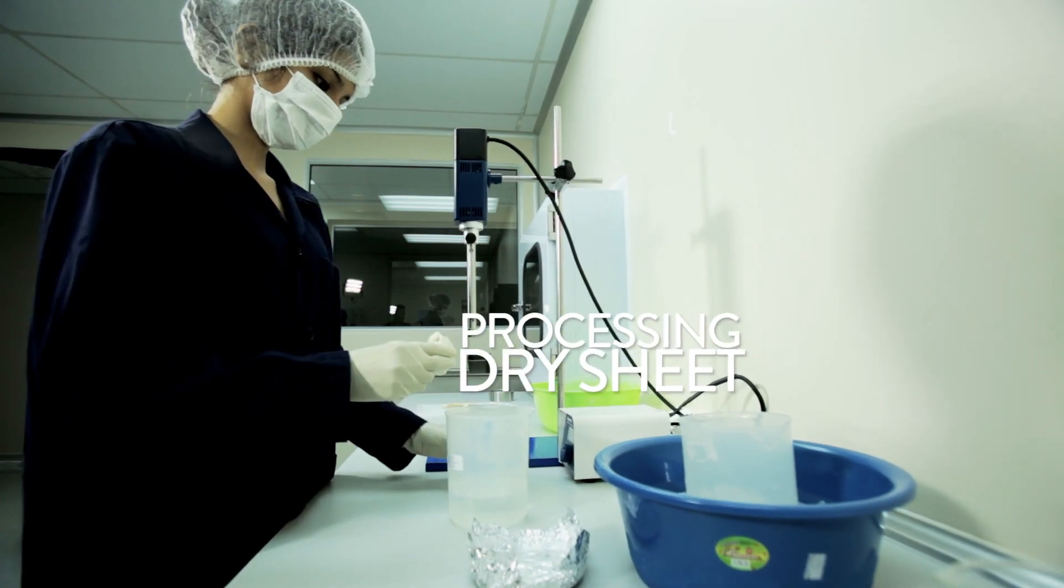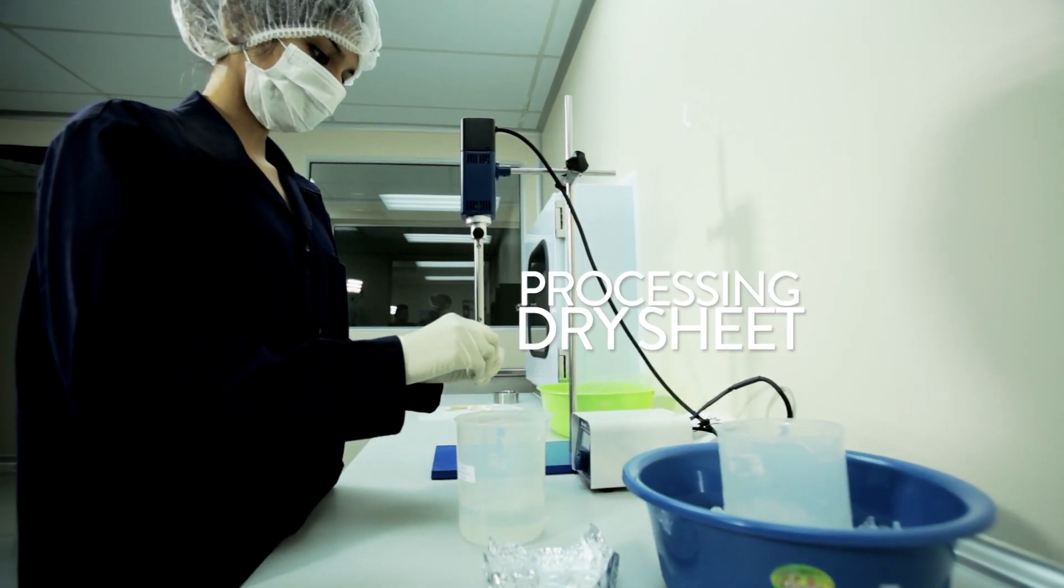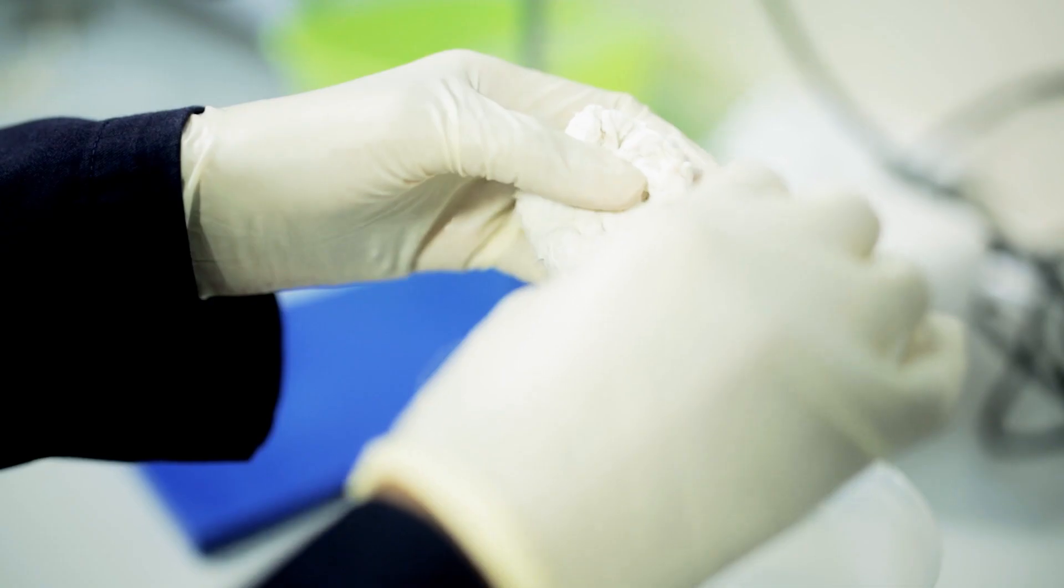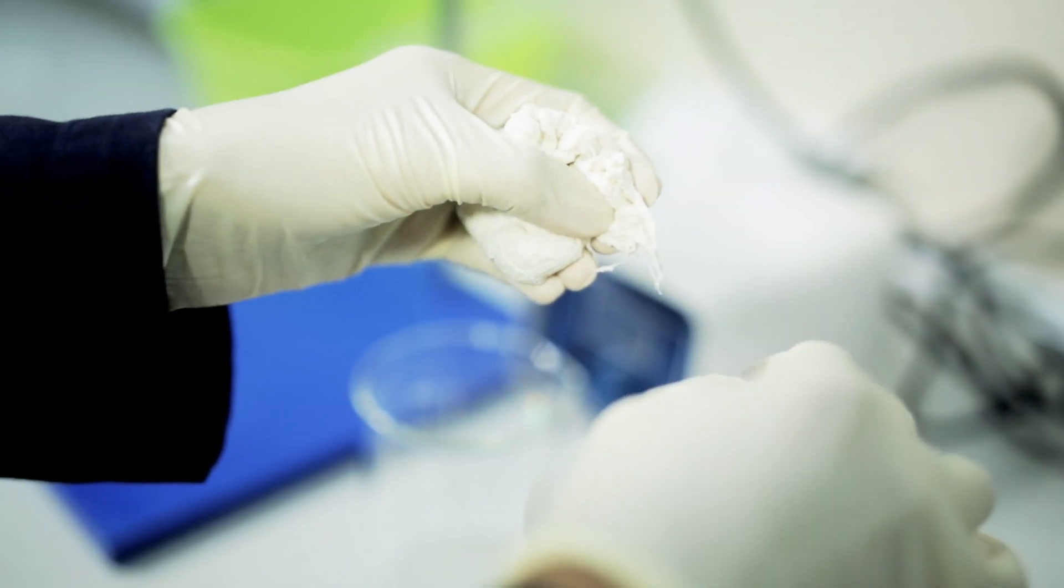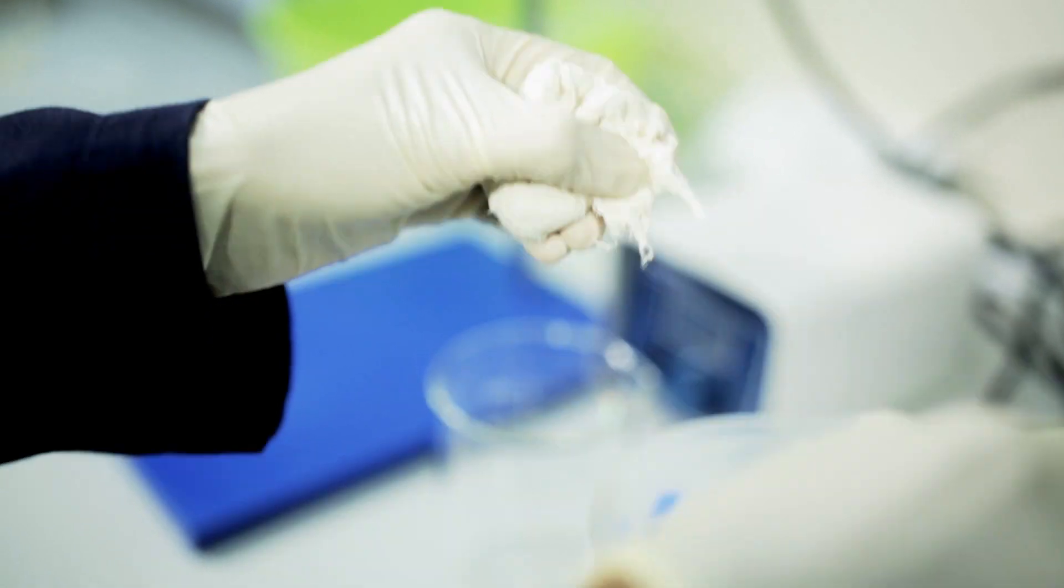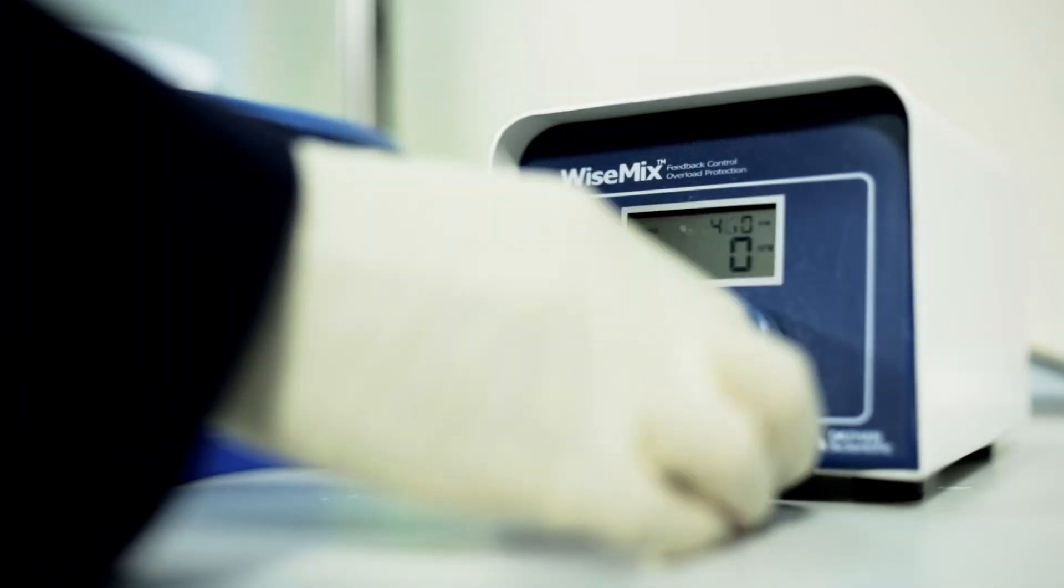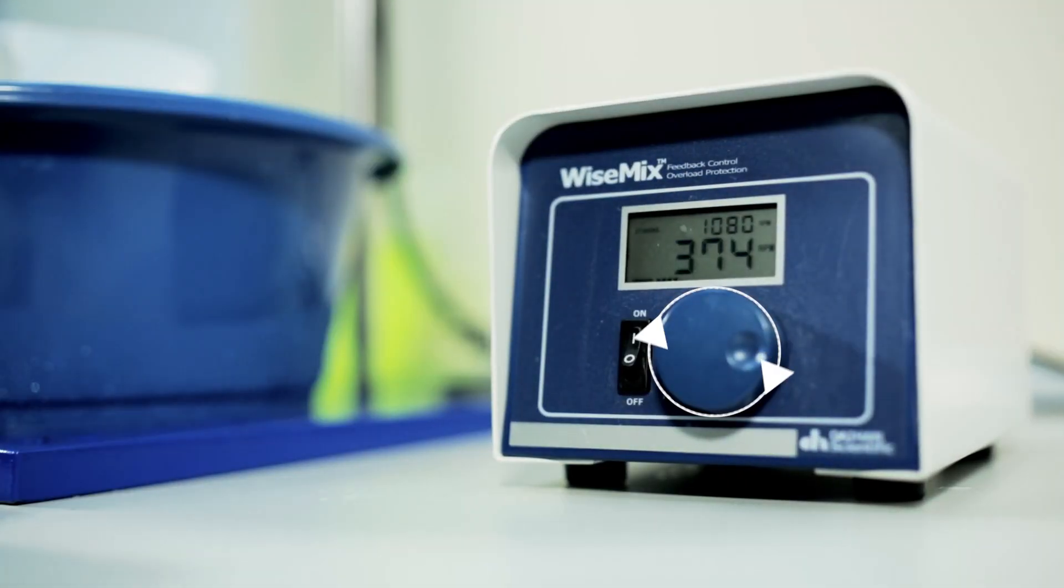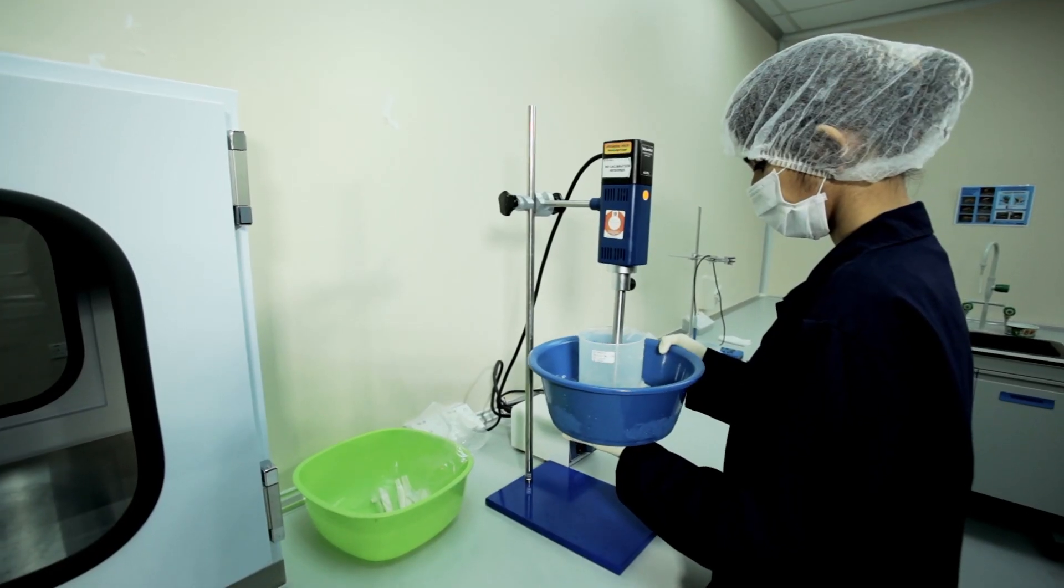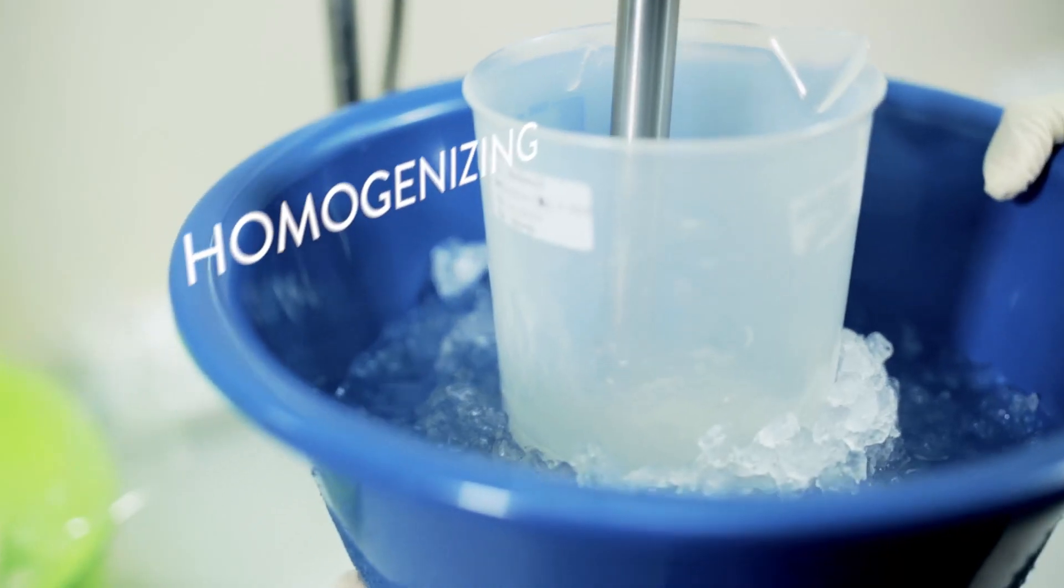For the dry sheet collagen dressing, the bovine tendon is first cut into small pieces and ground into minced tissue. These minced tissues are carefully separated into small strips and treated with enzymes and other chemicals. This process results in a solubilized collagen mixture which can then be used to make the dry sheets of dressing.